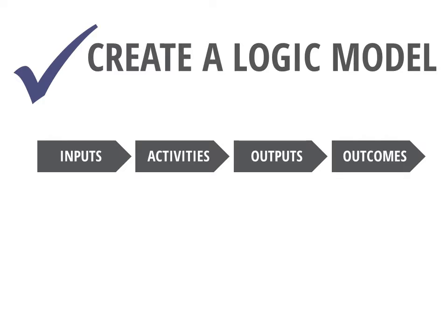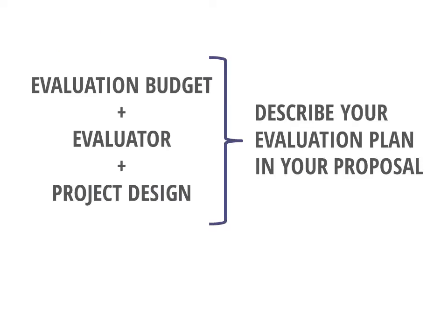As soon as you've roughed out your project plan, create a logic model that depicts its main inputs, activities, outputs, and outcomes. This graphic depiction of your project's design serves as a check to make sure your project is well thought out and logical. It also makes a great foundation for beginning to plan an evaluation. Once you have these three elements in place — a budget line for evaluation, an evaluator, and a sound project design — you can begin creating a plan for the evaluation of your project.